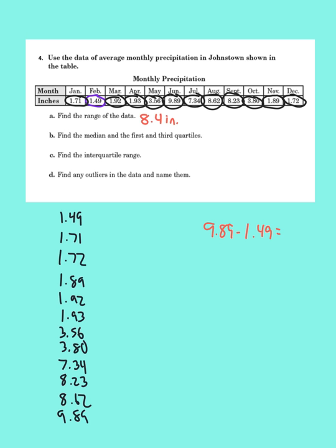Part B says find the median and the first and third quartiles. Now notice down below, I have my numbers from the least at top to the greatest at bottom. I wrote them up and down. And there's 12 numbers here. That means if I split it in half, there'll be 6 above and 6 below. That also means my median has to be between 1.93 and 3.56. So to find that, I'm going to add up 1.93 plus 3.56 and then divide that by 2. So they add up to 5.49. And if I divide that by 2, I get 2.745. So my median is 2.745 inches.